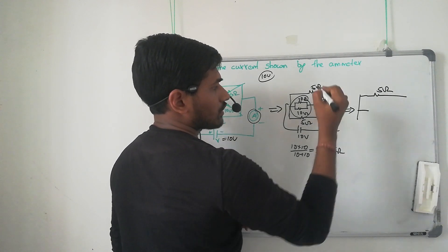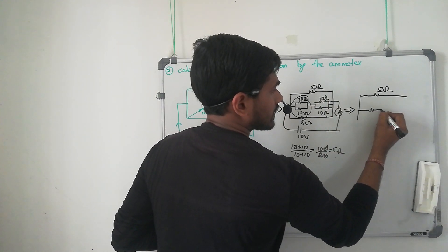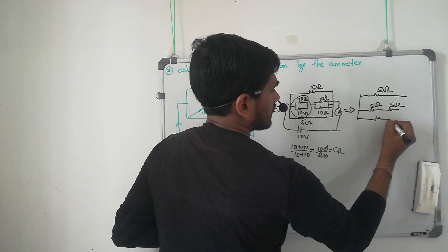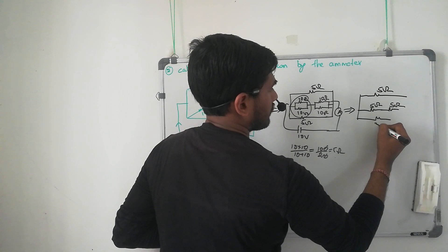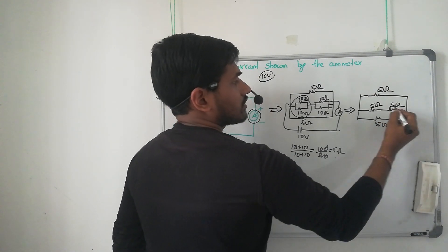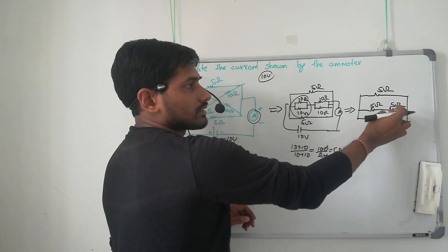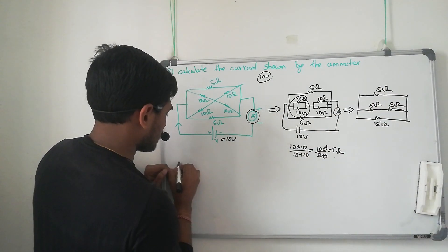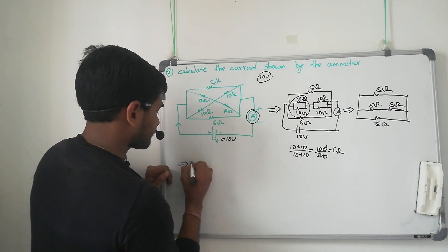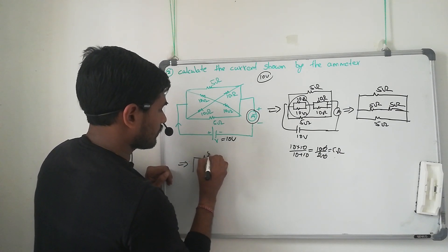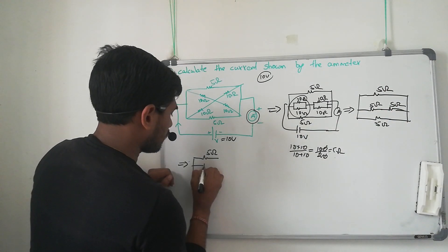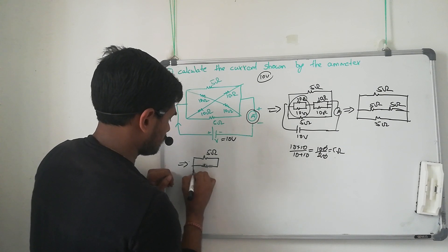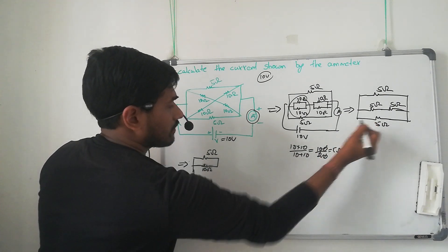Here also 5 ohm, and here also 5 ohm. So the remaining result has 5 ohm, 5 ohm, and then 5 ohm. These two resistors will be in series: 5 plus 5 equals 10 ohm. So the next circuit has 5 ohm, then 5 ohm + 5 ohm = 10 ohm, and here 5 ohm.